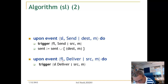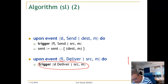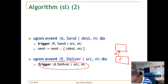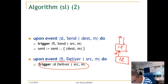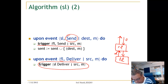If we get a delivery from the fair loss link, we deliver the message higher up. So: the fair loss link delivers to the stubborn link, then the stubborn link delivers the message higher up. If we get a request to send a message, we trigger a request event in the fair loss link, and we also store the message in the send buffer.